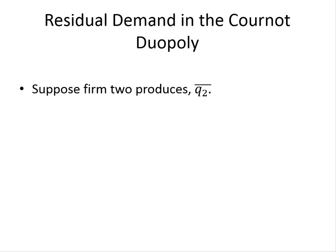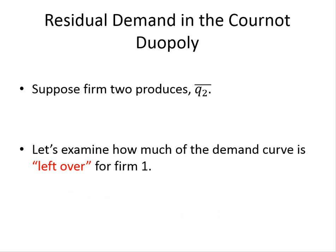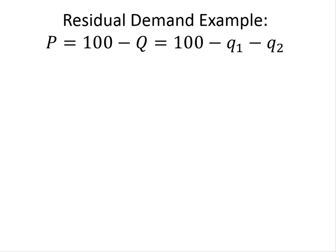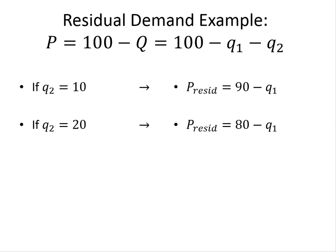The residual demand curve is an important element here. We ask ourselves: from firm one's perspective, if firm two produces some amount of output, how much of the demand curve is left over for firm one? This is very similar to what we did in second-degree pricing. For example, if firm two produces 10 units, we plug that into the demand curve and see what's left. If Q2 goes to 20, the residual demand for firm one is 80 minus Q1; if Q2 goes to 30, it's 70 minus Q1. As firm two's output increases, the demand curve intercept for firm one's residual demand is actually decreasing.